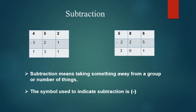Now see the next sum. The next sum is also arranged in 100s place, 10s place and units place. First, units place: 6 and 5. 6 minus 5, you get 1. 10s place is 8 and 2. 8 minus 2, you get 6. And then 100s place, we have 5 and 2. 5 minus 2, 3. So your answer is 361.